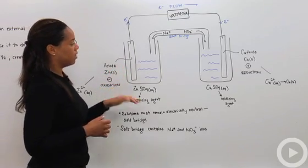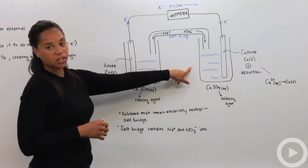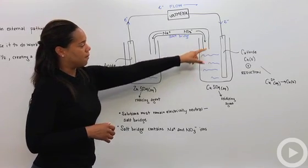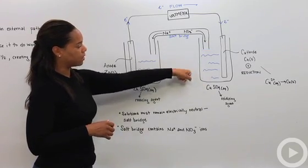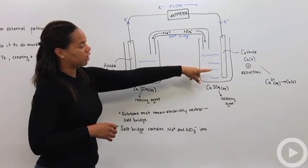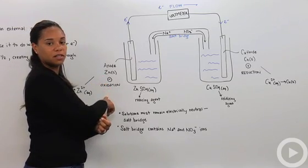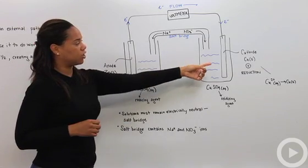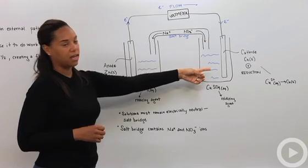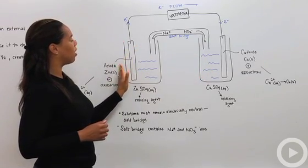Over here on the right-hand side we have our half-cell where reduction is taking place. We've got a piece of copper in a copper sulfate electrolytic solution, and that's where the reduction is occurring. Remember, negative over here for oxidation because this is losing electrons; reduction is positive because it's the gaining of electrons. We have the electron flow going from this side, the anode, flowing over to the cathode.